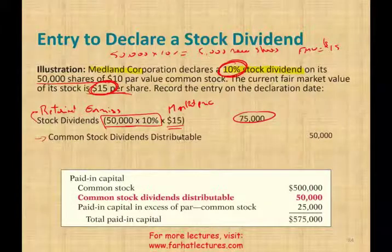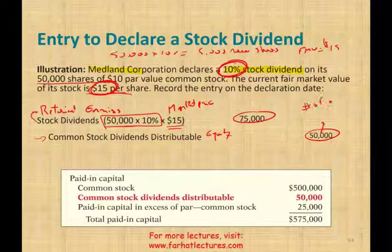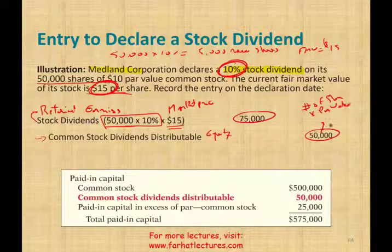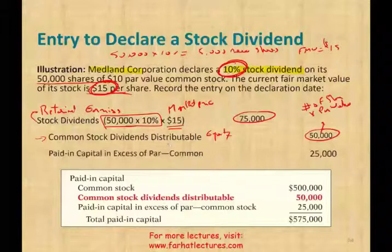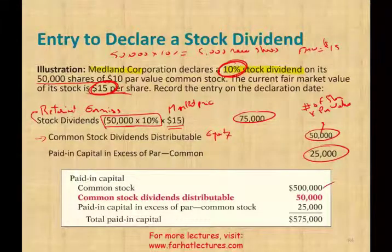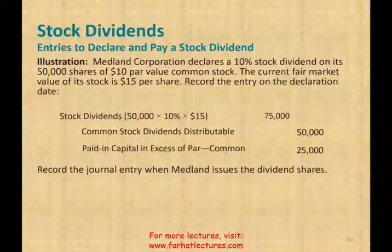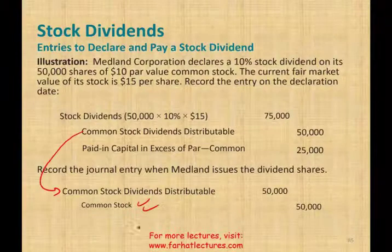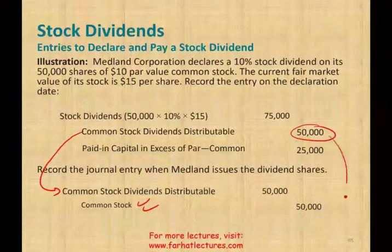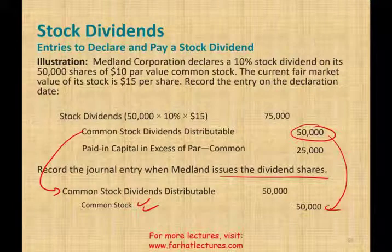We credit an account called common stock dividend distributable, which is an equity account, for the number of shares times the par value — that comes to $50,000. Anything left over is paid-in capital. So we have common stock dividend distributable and paid-in capital in our paid-in capital section. When we actually issue the stock to the shareholders, we debit common stock dividend distributable and credit common stock — turning the $50,000 distributable account into common stock.